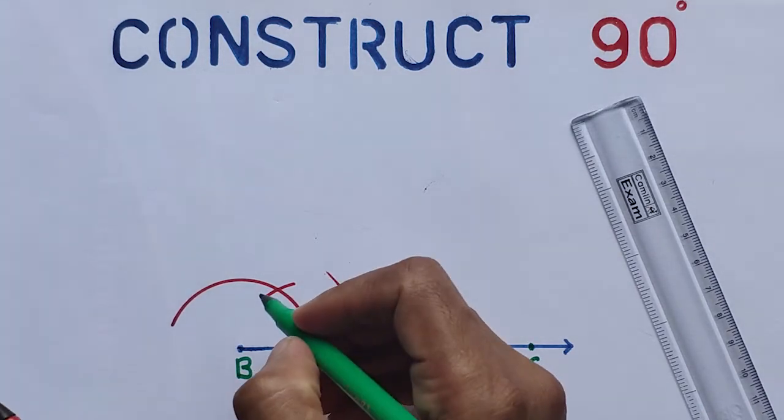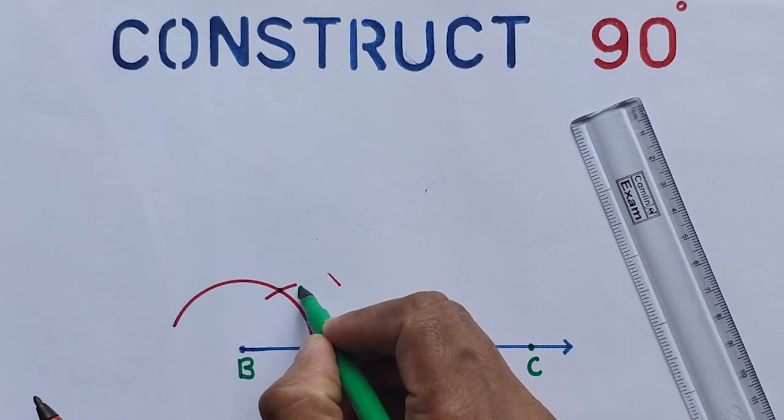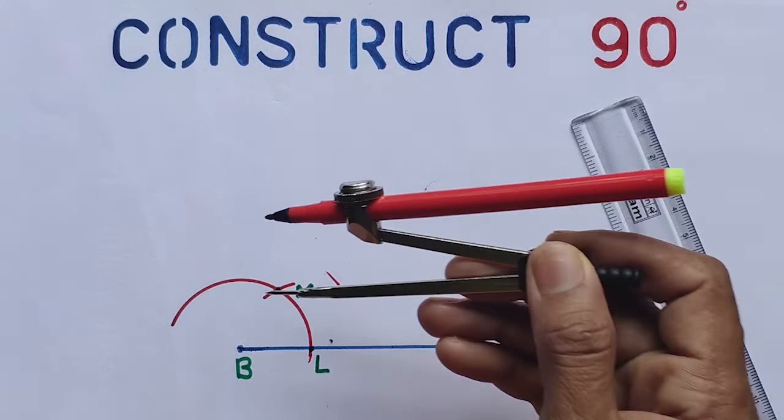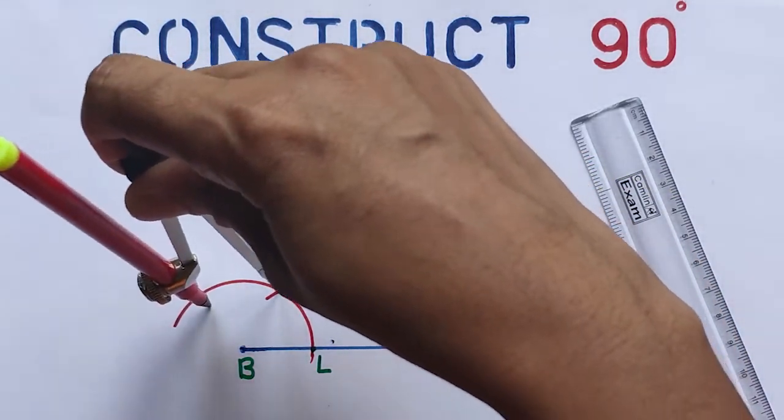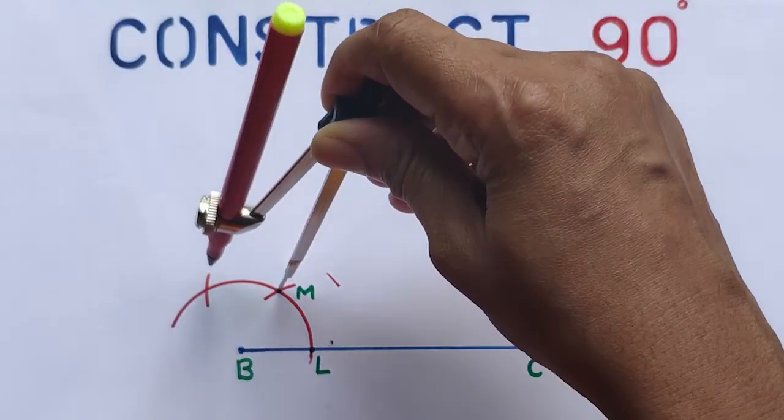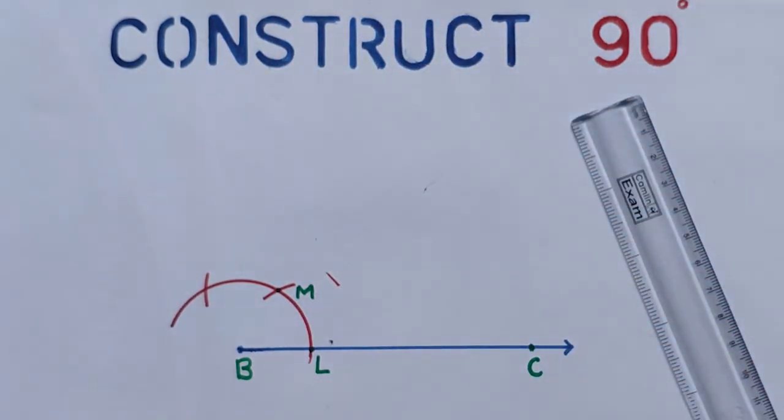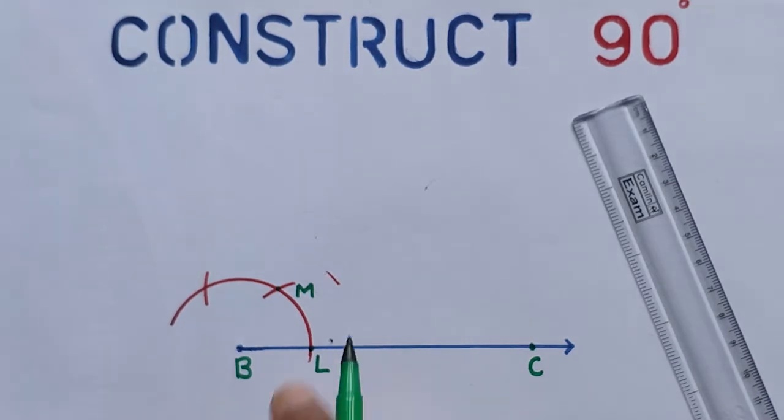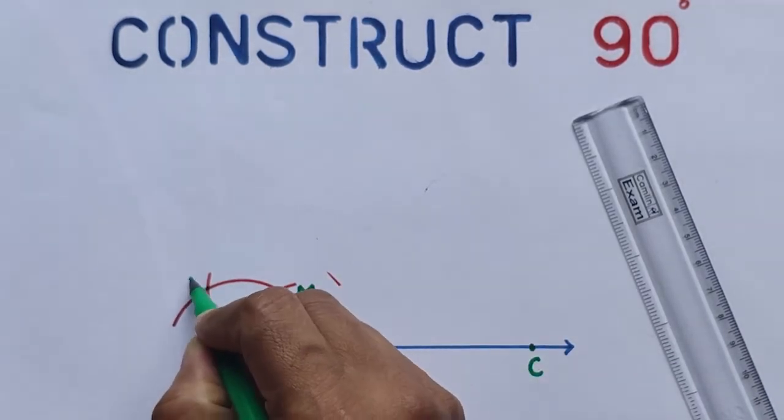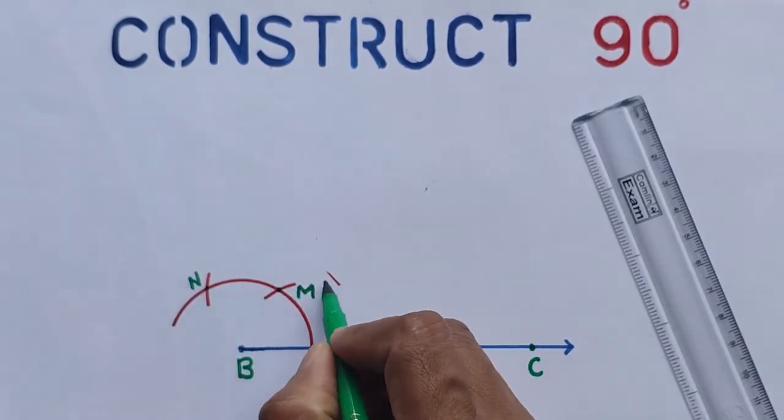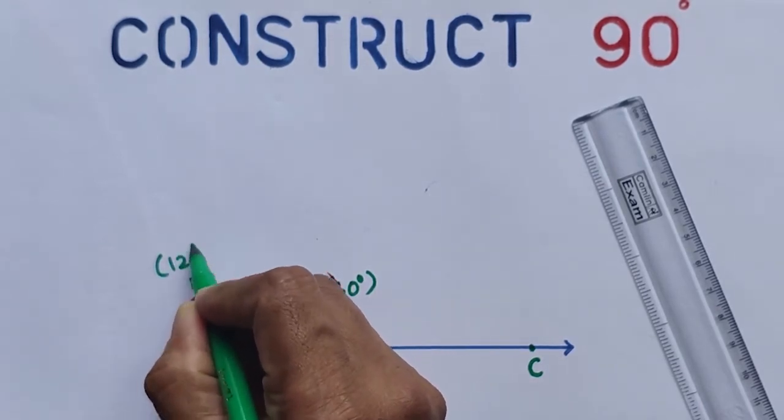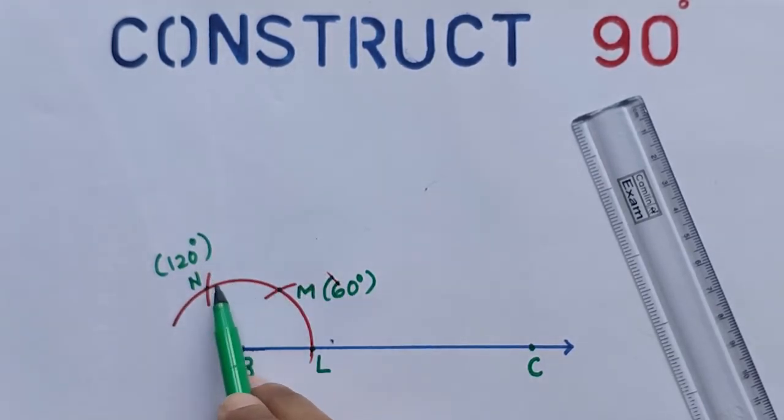Then again without changing the compass, place the metal tip on M, draw one more arc. That means again 60, we have drawn 60 plus 60 is 120. So this intersecting point is N. That means here 60 degrees and here 120 degrees, because 60 plus 60 is 120.